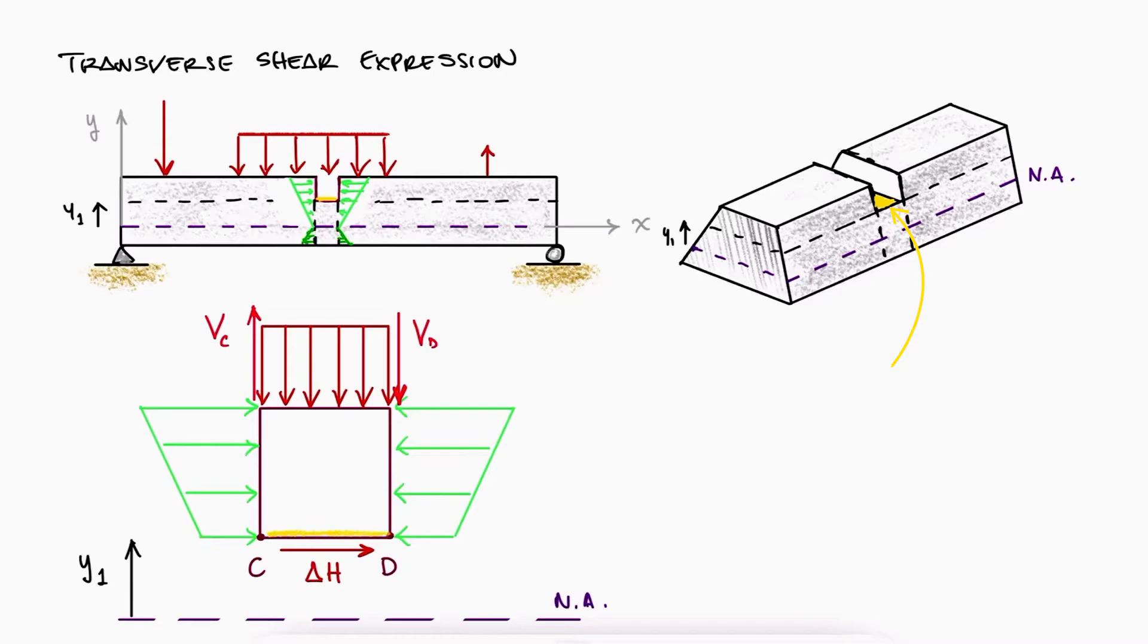The shearing stress that the shaded area in yellow would be subjected to would be that shear force delta H over the shaded area in yellow. If the slice perpendicular to the x-axis is small enough, this area can be calculated as delta x times t, but let's focus on the force for now.